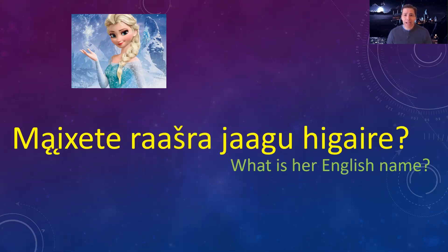So we learned how to ask what is her name — Jagu-Higaire — but what if we want to differentiate between English name and Ho-Chunk names? So we want to ask what is her English name: Mai-Chateh-Raj-Ra, Jagu-Higaire. You already know the phrase Jagu-Higaire from the last portion of the module — you're just adding on those two words Mai-Chateh-Raj-Ra. What is her English name?